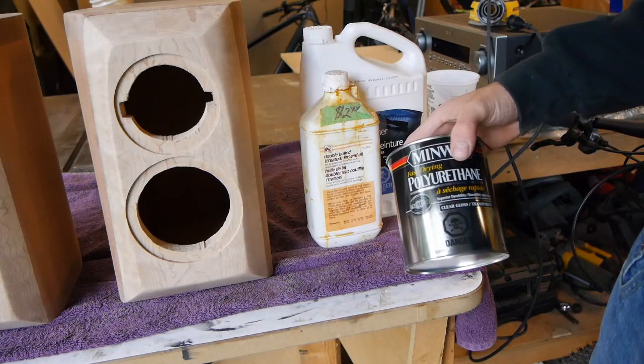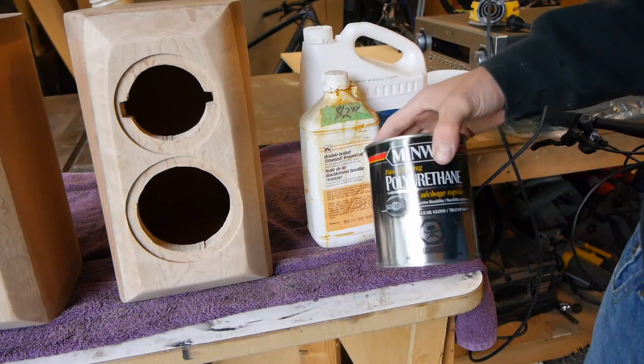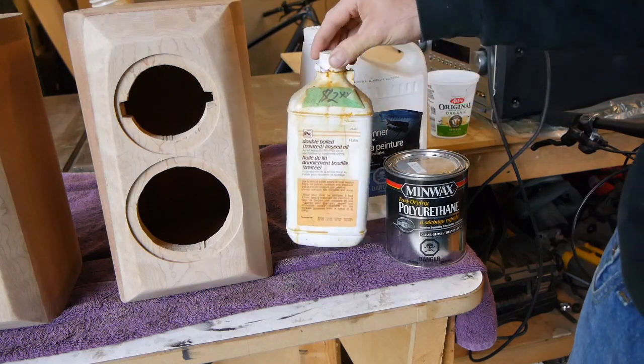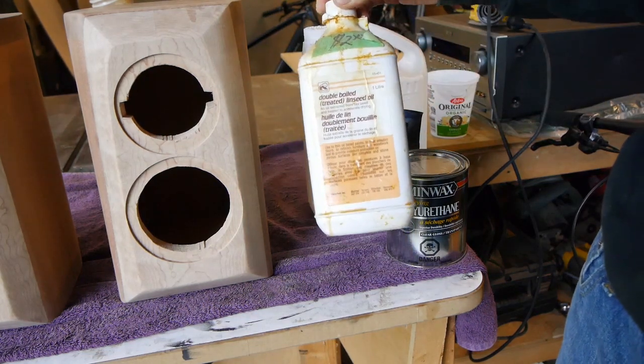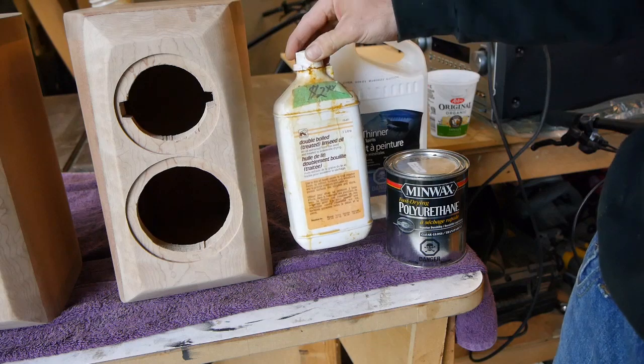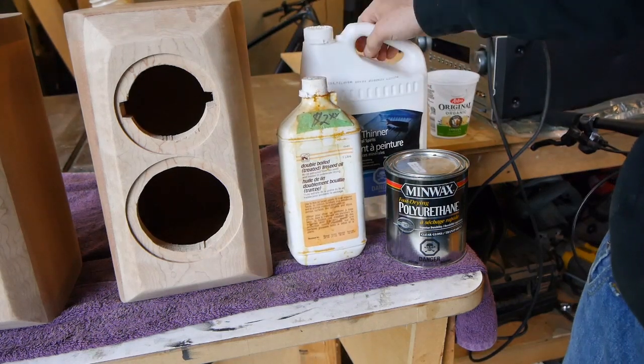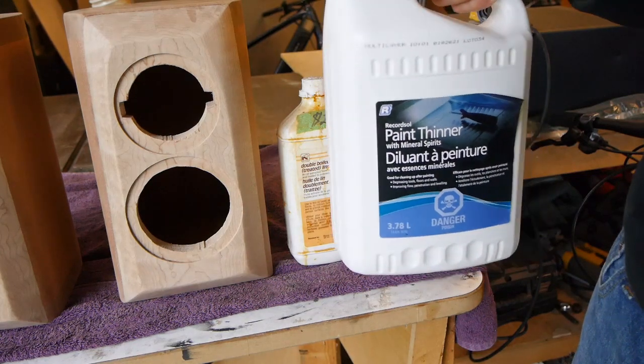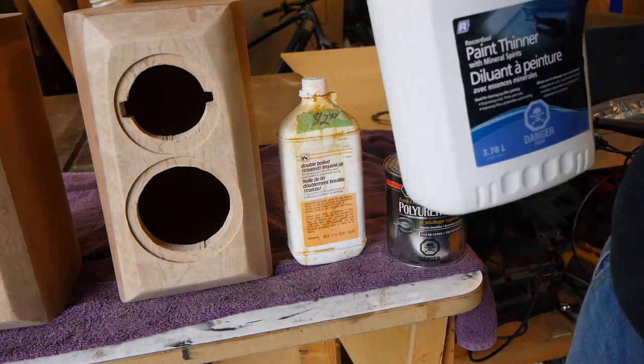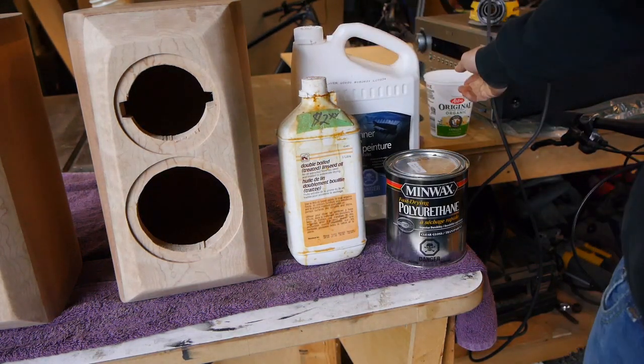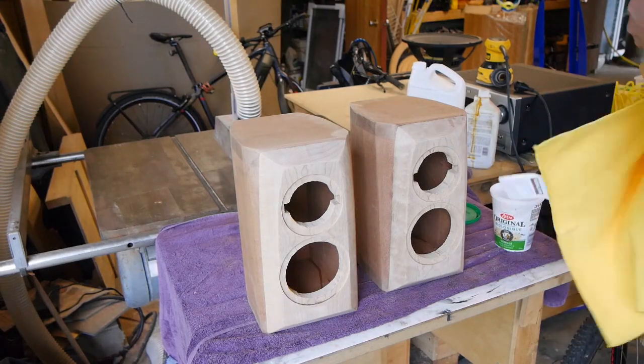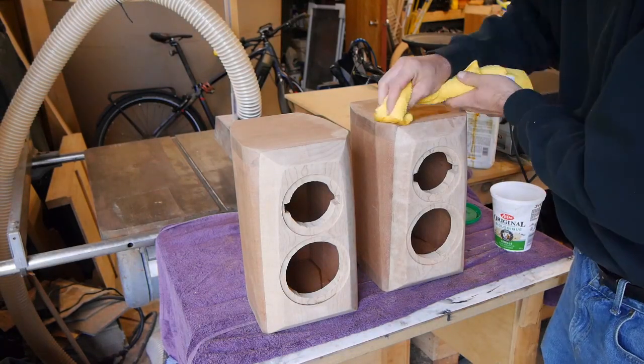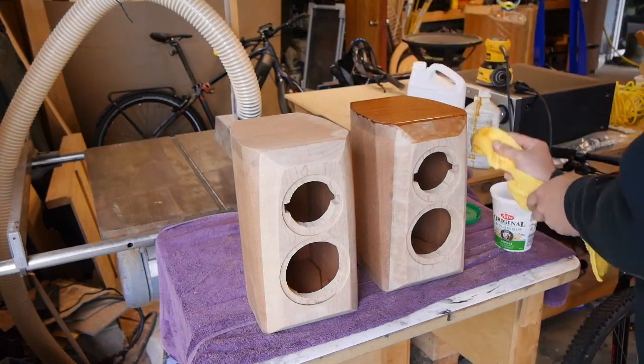Okay, now it was time to do the finishing. For this finish I could have sprayed a finish on there but I wanted to apply a hand-applied finish, so I went with one-one-and-one of boiled linseed oil, mineral spirits which I cheaped out and used paint thinner, and polyurethane mixed up and just hand applied to the speaker. And this is truly my favorite part.